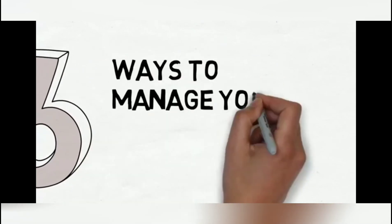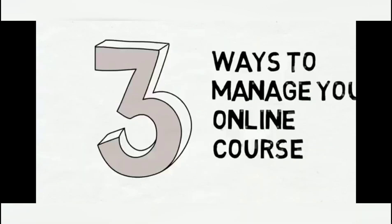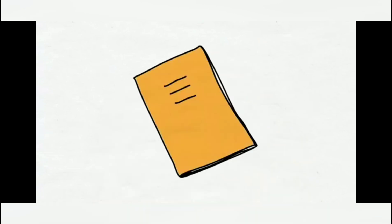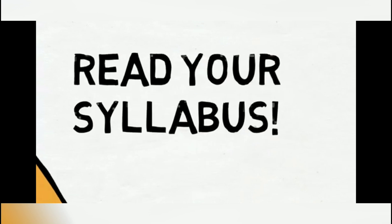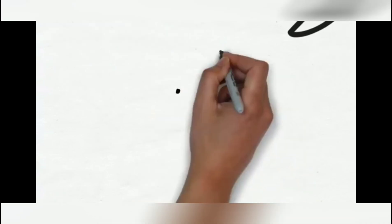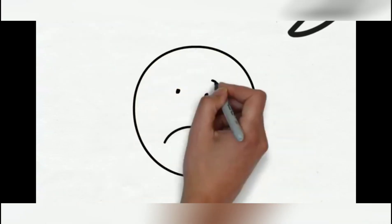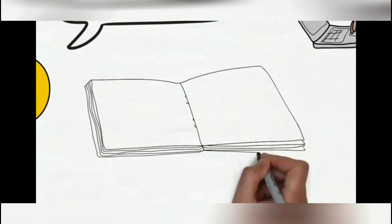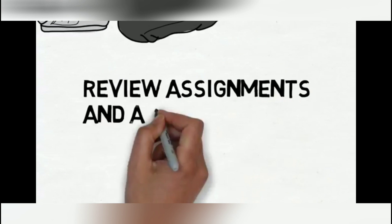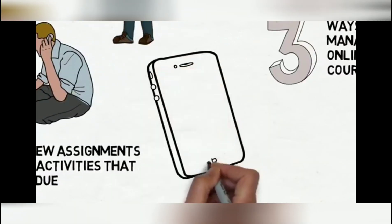Let's take a quick look at three things you should do to successfully manage your online courses and stay motivated throughout the semester. First, you should carefully read the course syllabus. It contains great information that many students unfortunately forget to read, and then wonder why they don't understand their assignment expectations. So you have to set a reminder for yourself.